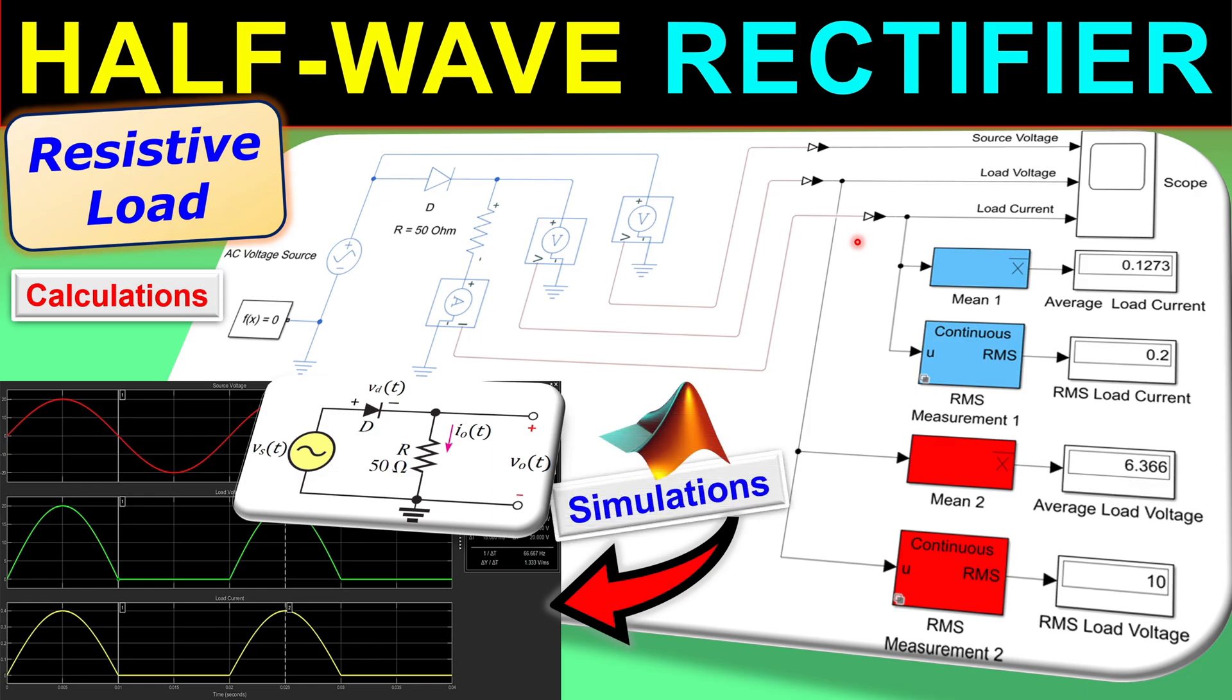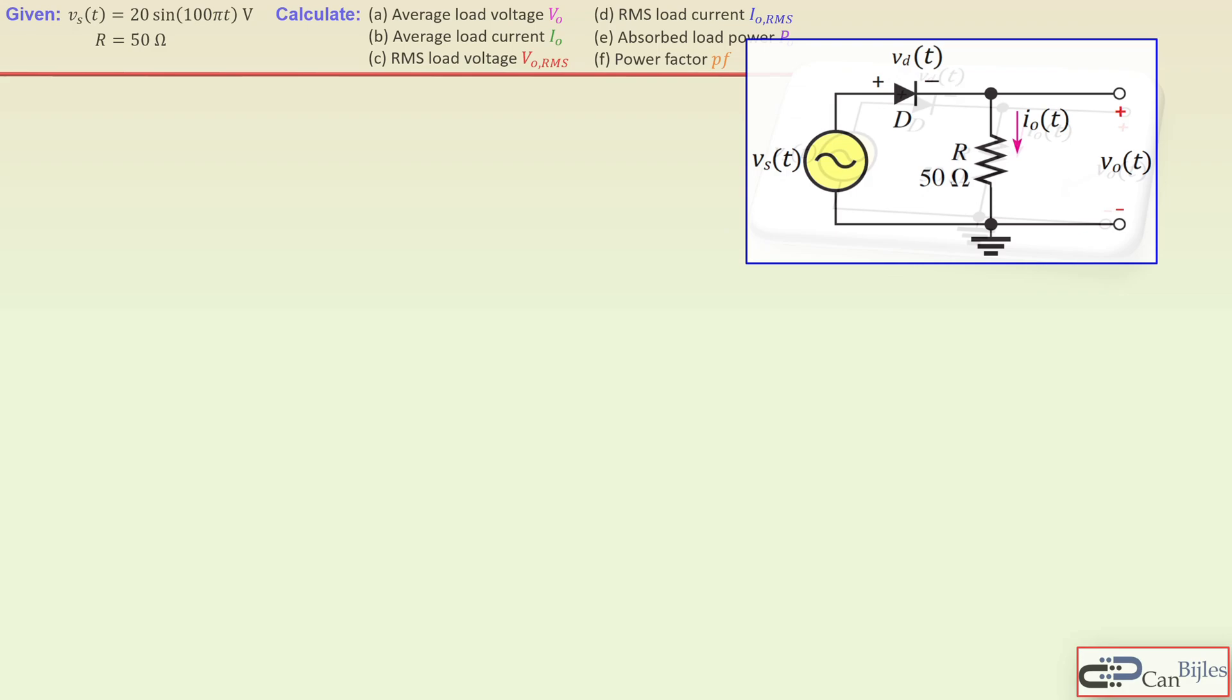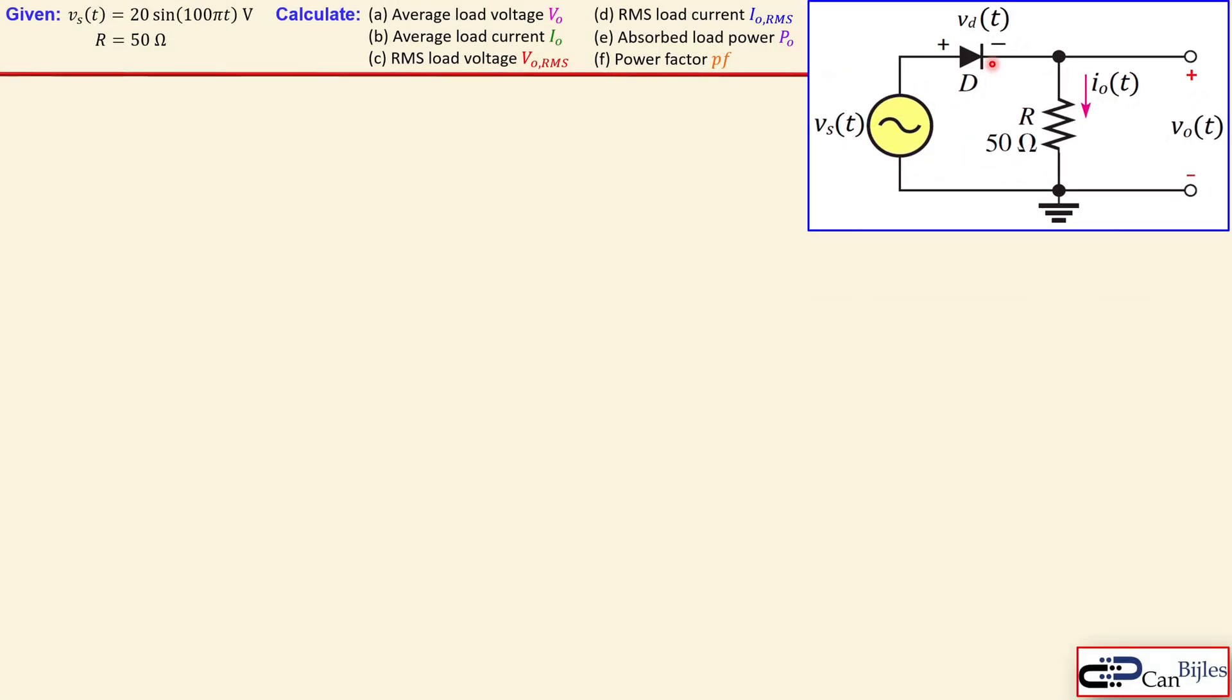So let's look at our circuit. We have this source which is our AC source, given by this expression: 20 sin(100πt) volts. We have a diode here considered as ideal, and we have a resistor here, pure resistor of 50 ohms.